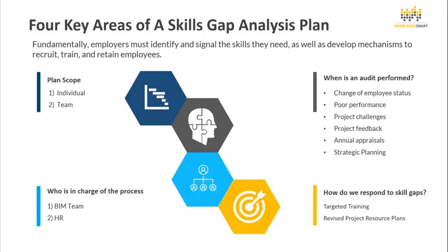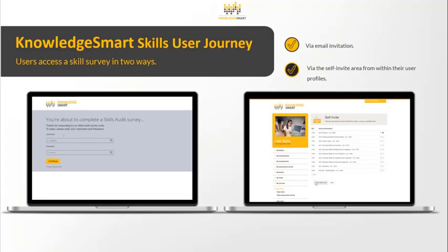There are four areas of a skills gap analysis plan. First, the plan scope: is this based on individuals or teams? Second, who's in charge — the BIM team, HR team, or stakeholders from both? Third, when will the audit be performed — regularly, after poor performance, due to project challenges, as part of annual appraisal, or strategic planning? Fourth, how do we respond to skill gaps — through targeted training plans, revised project resource plans, or revised recruitment plans?